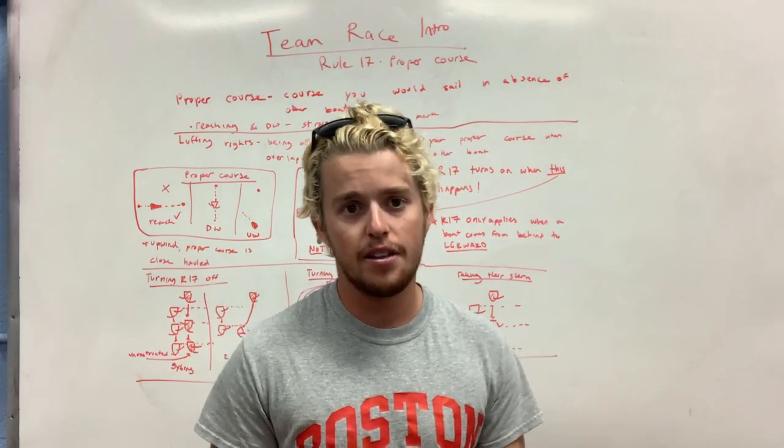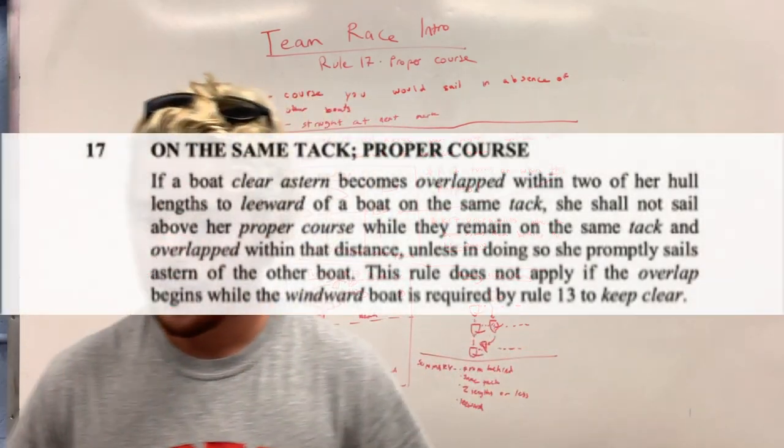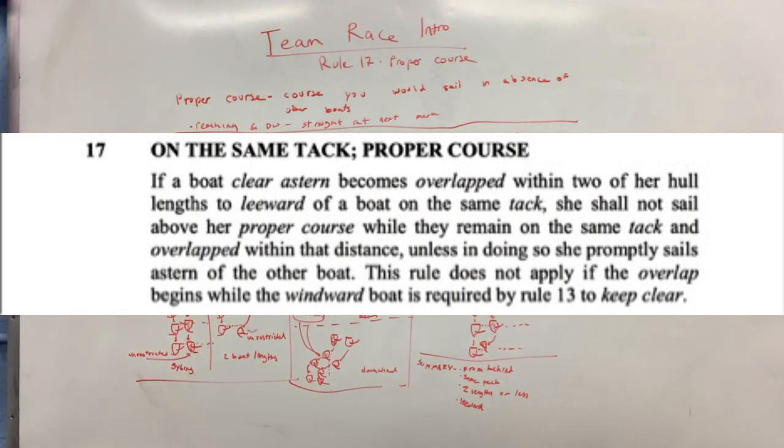I'm going to read it to you guys, put it on the screen, then we're going to break it down. So, Rule 17, on the same tack proper course. If a boat clear astern becomes overlapped within two of her hull lengths to leeward of a boat on the same tack, she shall not sail above her proper course while they remain on the same tack and overlap within that distance, unless in doing so, she promptly sails astern of the other boat. This rule does not apply if the overlap begins while the windward boat is required by Rule 13 to keep clear.